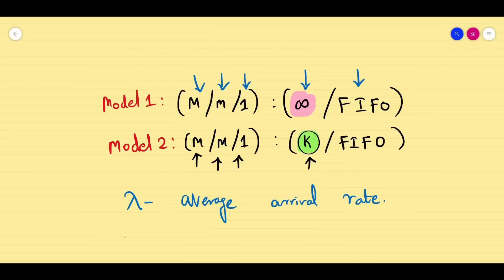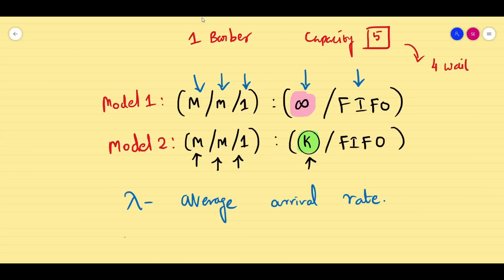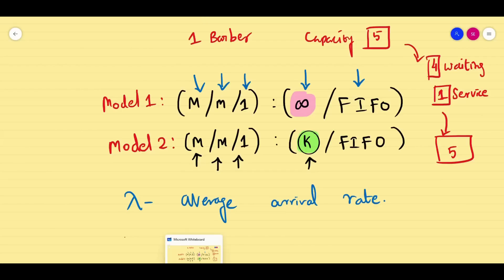How do we identify whether the system is finite or infinite? For infinite system capacity, they don't mention anything. But for finite system capacity, they will mention it. For example, taking the same barber, they will say a one-man barber shop with capacity 5, or they will say 4 persons are waiting and 1 person in service. So that means only 4 persons can sit in the waiting chairs and one person is being serviced — a maximum of 5 persons are allowed. That makes it an M/M/1 finite capacity problem — Model 2.